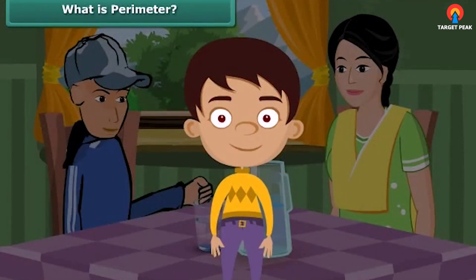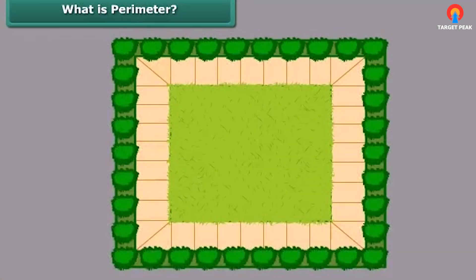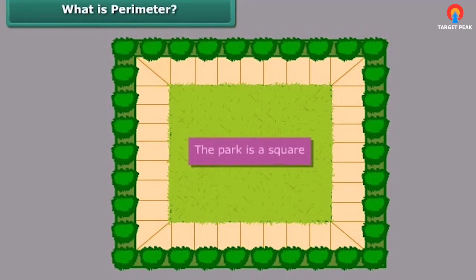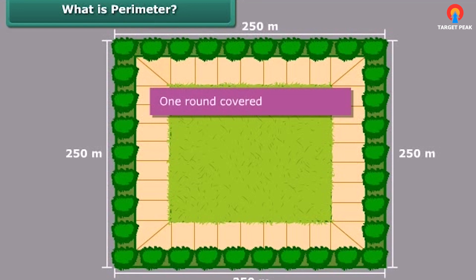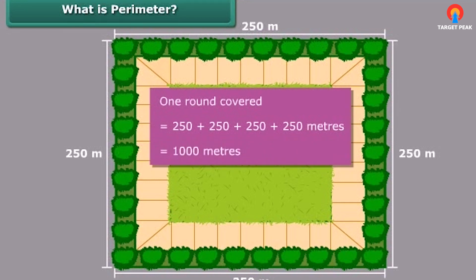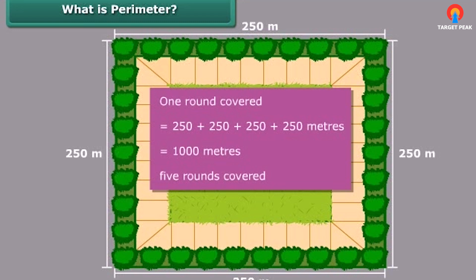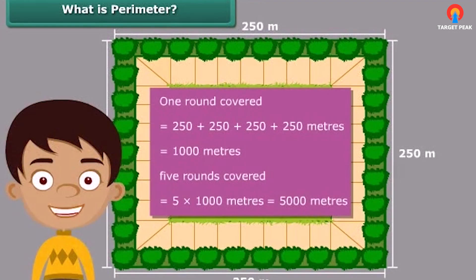Let us now try to answer your mother's question: how many meters did you cover jogging? In every round of jogging, you covered the four sides of the park. Since the park is a square, all its sides are equal. Thus, in one round you covered 250 + 250 + 250 + 250 meters, that is 1000 meters. Therefore, in five rounds you covered 5 × 1000 meters, that is 5000 meters or five kilometers.